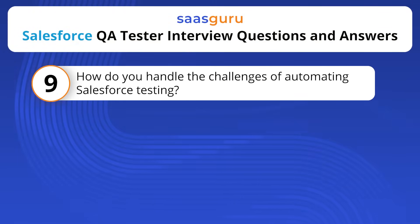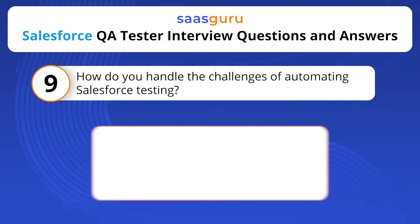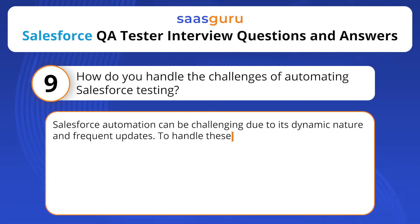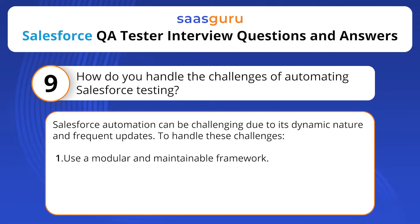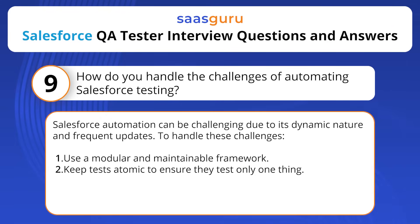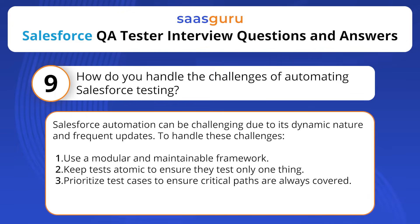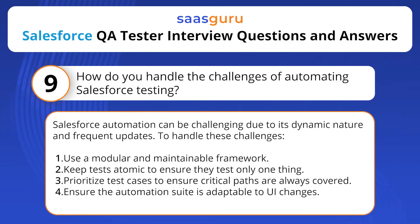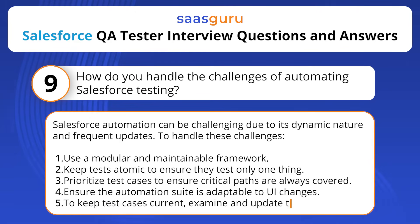How do you handle the challenges of automating Salesforce testing? Salesforce automation can be challenging due to its dynamic nature and frequent updates. To handle these challenges: use a modular and maintainable framework; keep tests atomic to ensure they test only one thing; prioritize test cases to ensure critical paths are always covered; ensure the automation suite is adaptable to UI changes; and examine and update test cases frequently to keep them current.